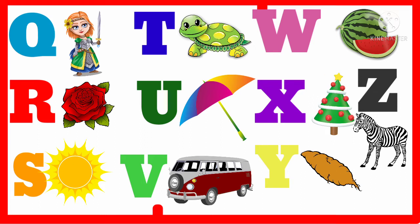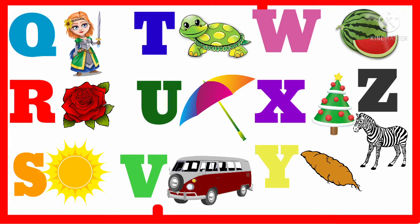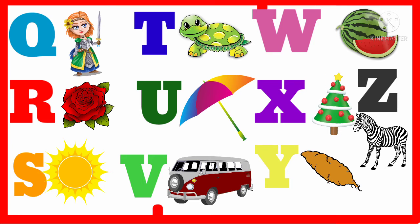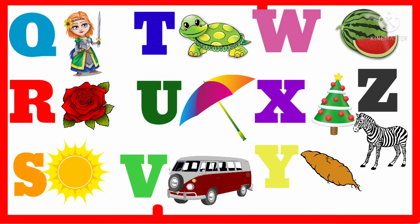U. U for umbrella. V. V for van. W. W for watermelon. X. X for X-ray. Y. Y for yak. Z. Z for zebra.